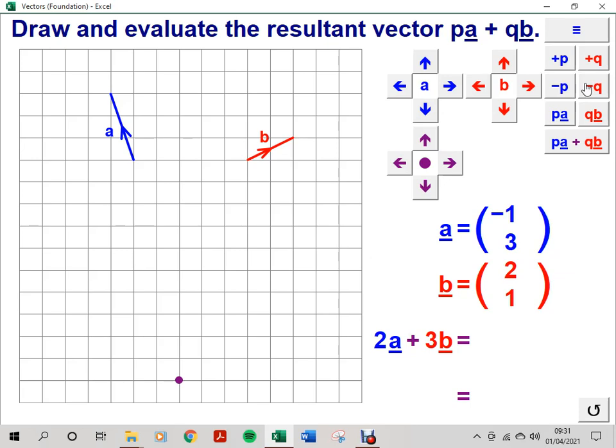We were given starting conditions, but I'm going to reset the screen and create different vectors and scalar multiples. The blue vector A is two units left and one unit up. And the red vector B is three units left and two units down. And the value of P is two, and Q is minus three.